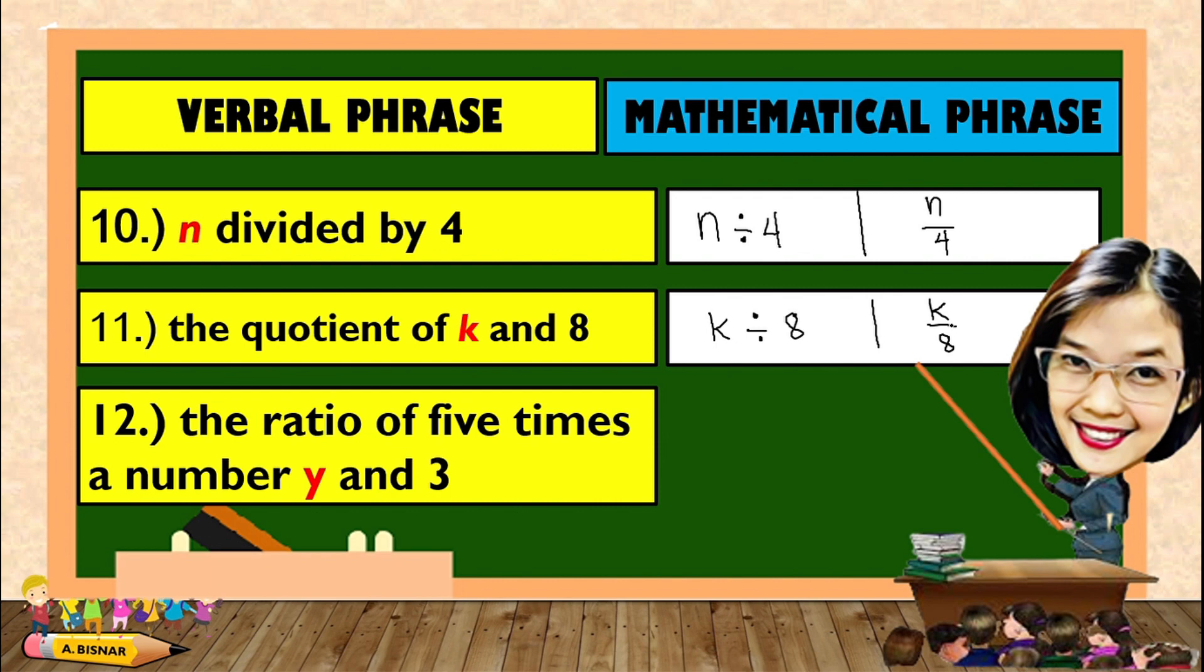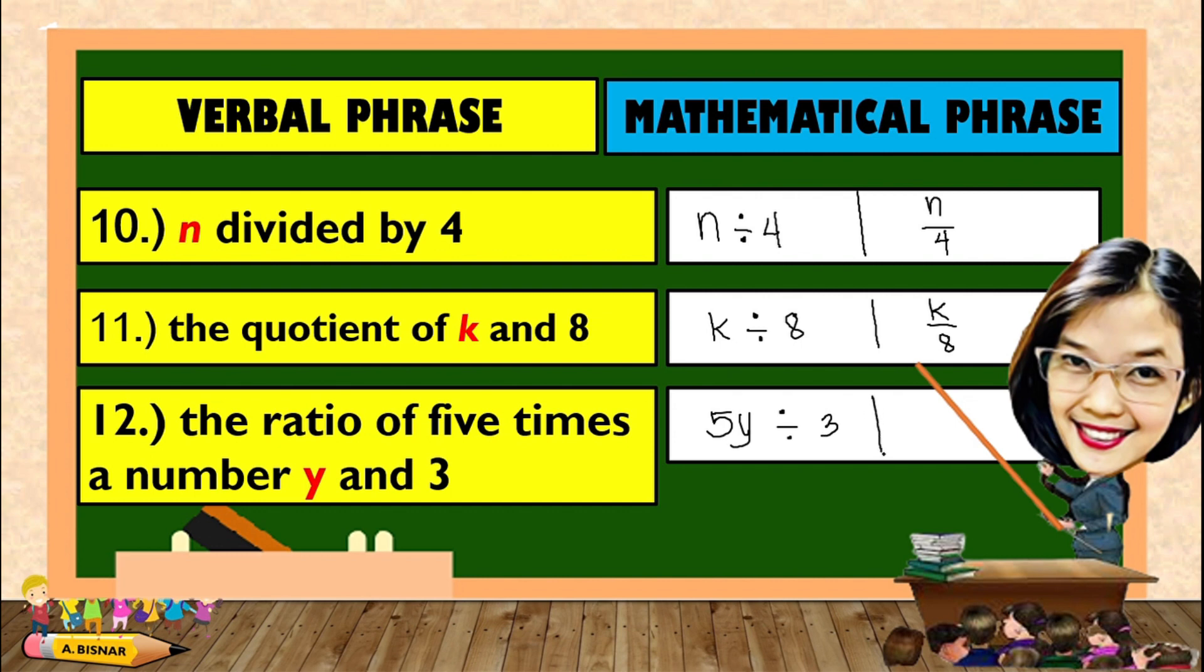Another, the ratio of 5 times the number Y and 3. Which means, the ratio of 5 times the number Y and 3, or 5Y over 3.